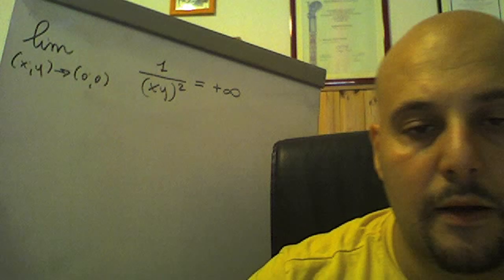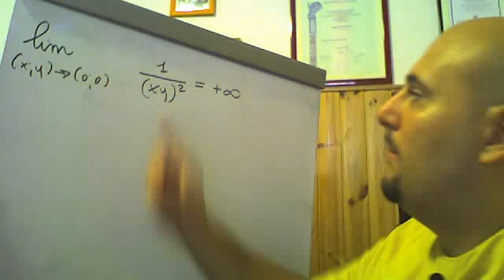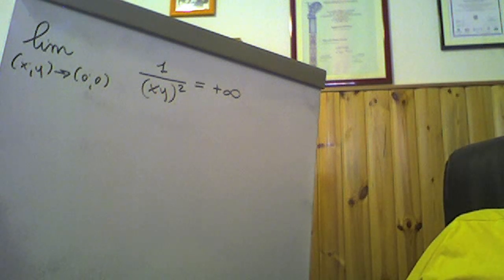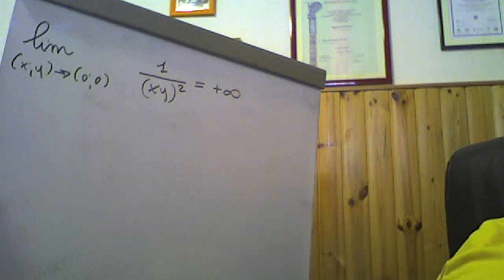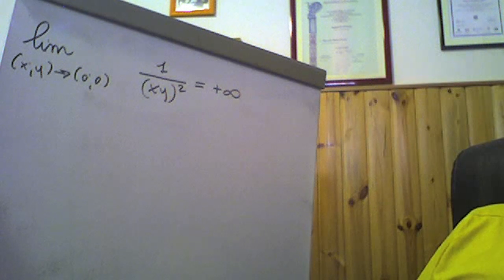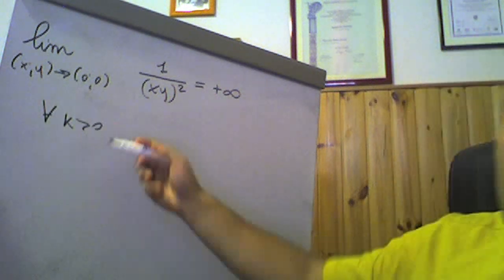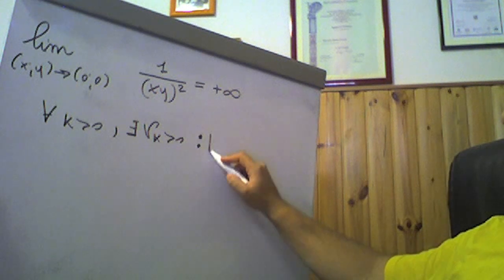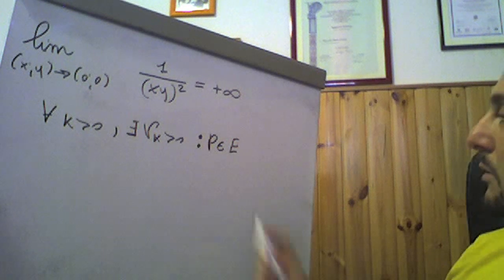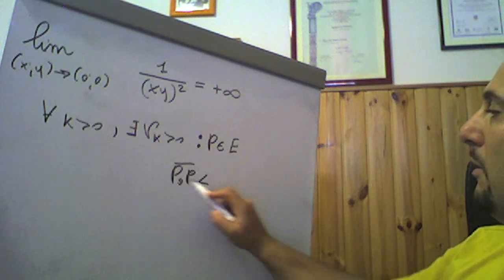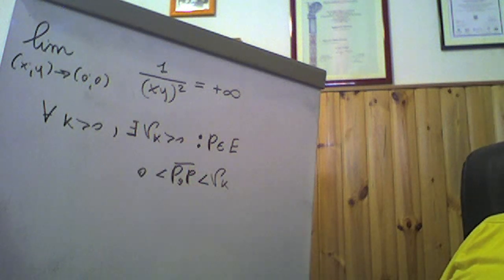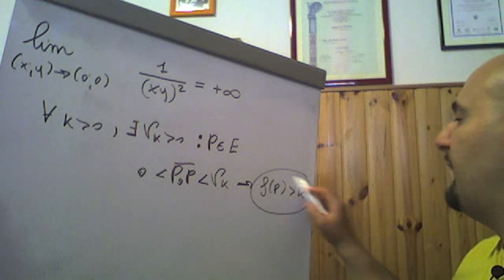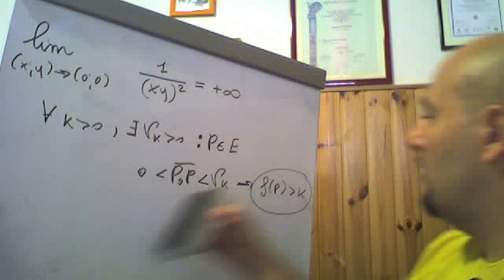Vediamo subito un altro esempio. Verifichiamo che il limite per (x,y) → (0,0) di 1/(xy²) sia pari a +∞. Ricordiamo che quando lambda tende a +∞, ovvero la funzione è divergente positivamente, comunque si fissi un k positivo, esisterà un delta k positivo tale che, per p con la distanza |P₀P| compresa tra 0 e delta k, si abbia definitivamente che f(P) sia maggiore di k.